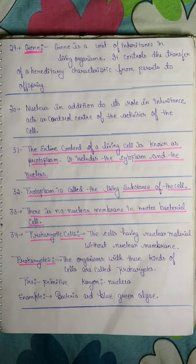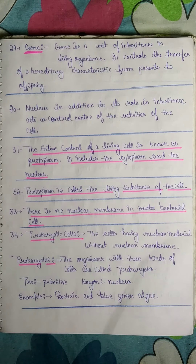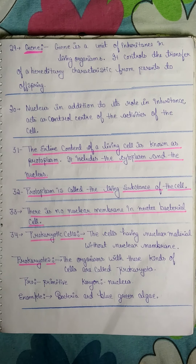Hello students, this is Class 8 NCERT notes of Biology Chapter 8. This is Part 2 of this chapter, so let's start. Point 29: Gene — gene is a unit of inheritance in living organisms.